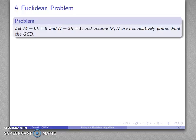Let's take a look at this problem. We have m equal to 6k plus 8 and n equal to 3k plus 1. And we want to assume that m and n are not relatively prime. And we want to find the greatest common divisor.